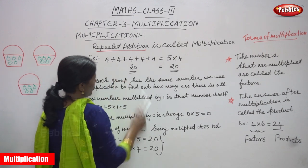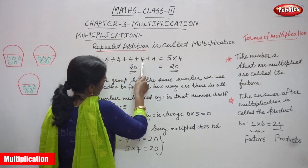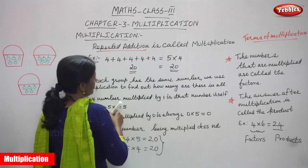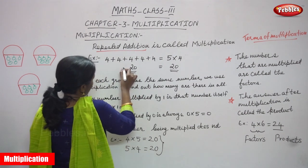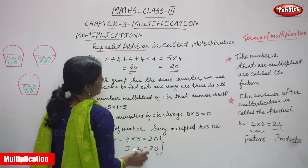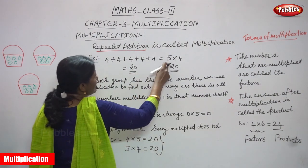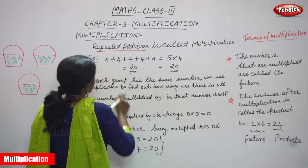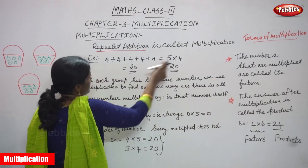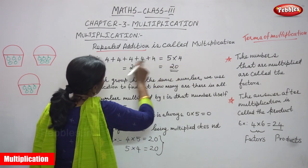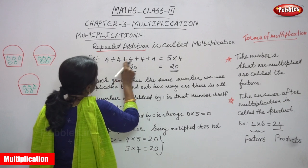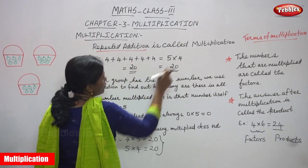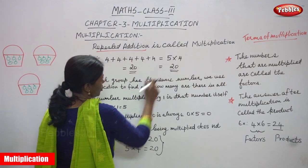8 plus 4 is 12. 12 plus 4 is 16. 16 plus 4 is 20. You can get this answer. Now look at this: 5 into 4. This is 4 — how many times does it come? 1, 2, 3, 4, 5 times. So 5 into 4, you can get 20.